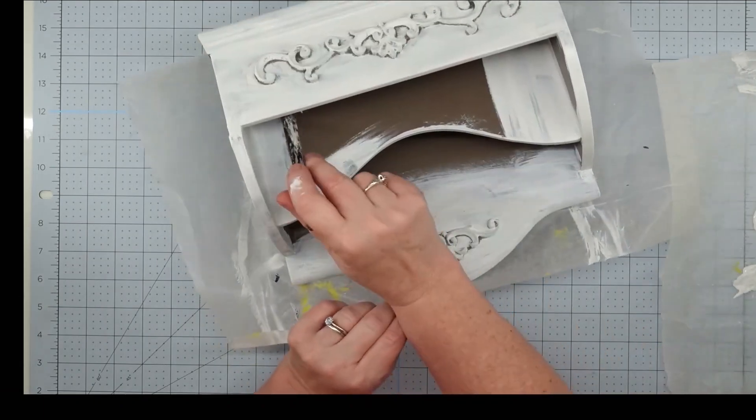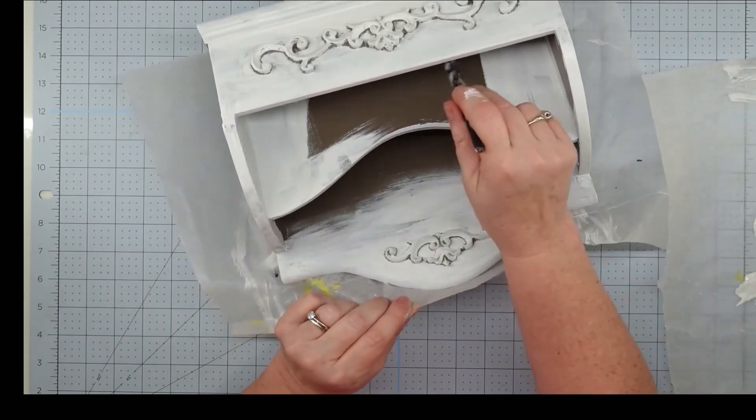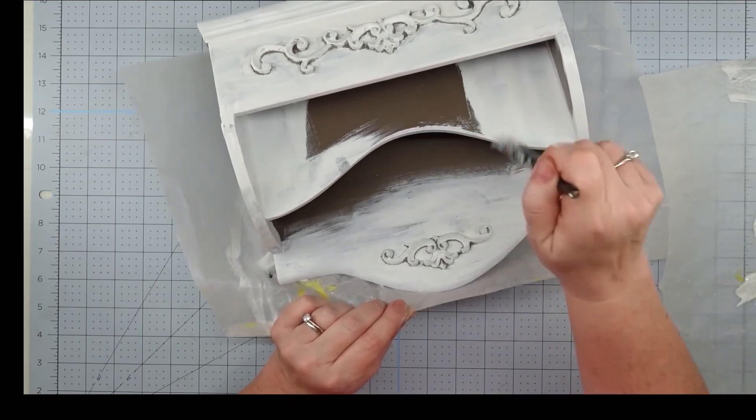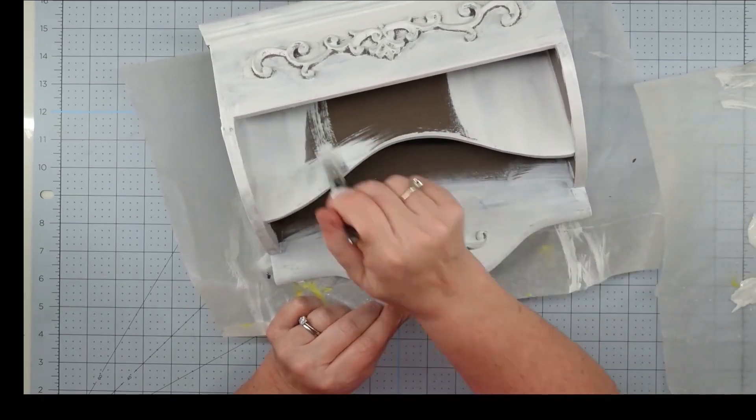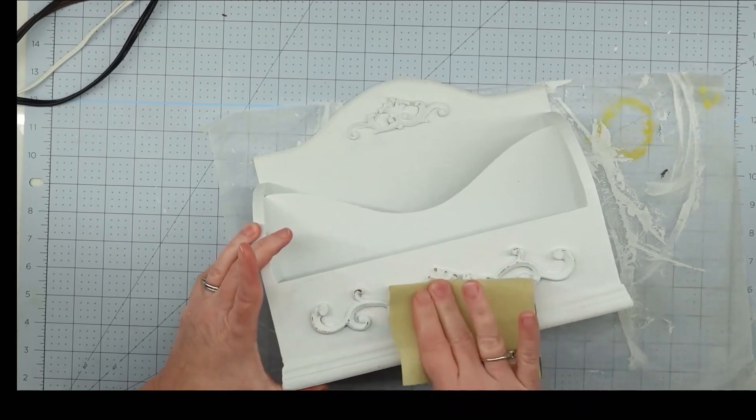So I decided to take my white Waverly chalk paint and give this a really good coat of paint. I thought this was going to bring out that detail, and I knew I could distress it to give it that farmhouse look. I painted the inside and the outside, front and back, and set it aside to dry.